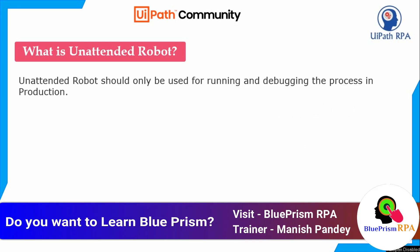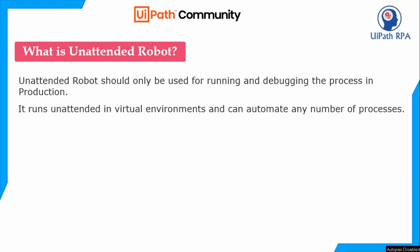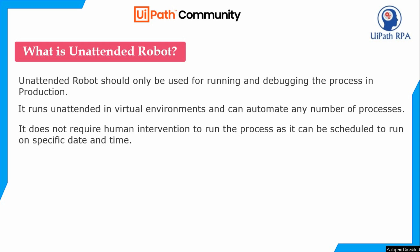Unattended robots are used for running and debugging processes in production. They run unattended in virtual environments and can automate any number of processes. They don't require human intervention to run the process, as they can be scheduled to run on a specific date and time. With attended robots, you have to manually run the job from the robot assistant and stop it from there.